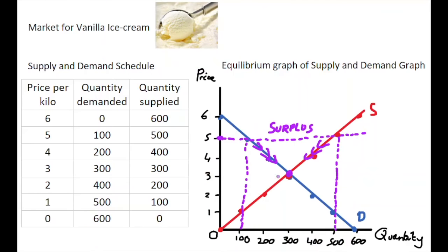And what this equilibrium point means is it is at a price of three euro on the market and a quantity both supplied and demanded of 300.